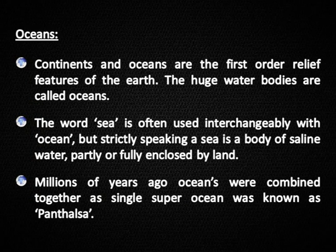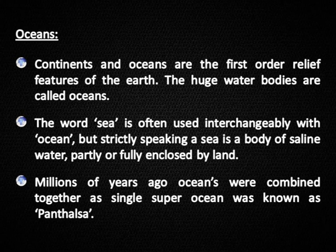Oceans: Continents and oceans are the first orderly features of the earth. These huge water bodies are called oceans. The word 'sea' is often used interchangeably with 'ocean', but strictly speaking, a sea is a body of saline water partly or fully enclosed by land. Millions of years ago, oceans were combined as a single super-ocean known as Panthalassa.